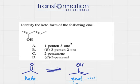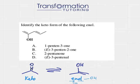Hi guys, this is Maya Alochi and in this video I will teach you how to identify the keto form when an enol is given. First, let's look at the keto and enol forms. The keto form is when we have C double bond O, and it equilibrates with the enol form, where the carbon that had the double bond O will have an OH and it will be next to a C double bond C.